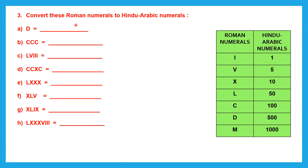Now question 3: convert these Roman numerals to Hindu-Arabic numerals. Go from left to right, look at each letter and write the value. D is 500. CCC is 100 plus 100 plus 100 equals 300. L is 50, V is 5, and III is 3 — so 50 plus 5 plus 3 equals 58.